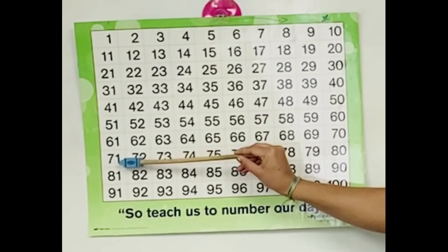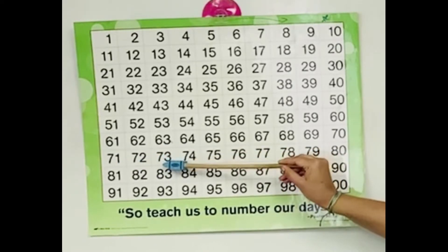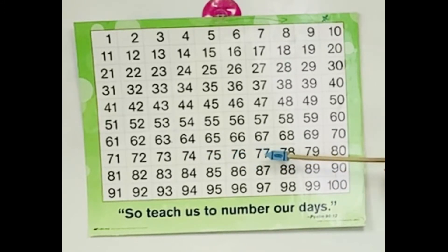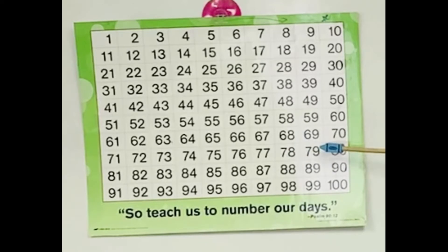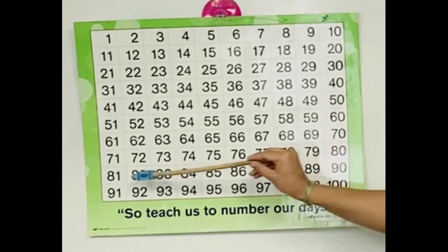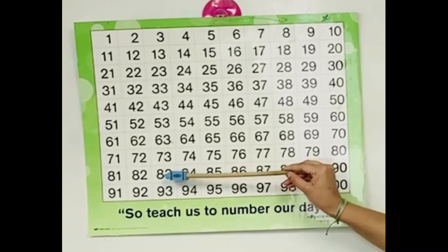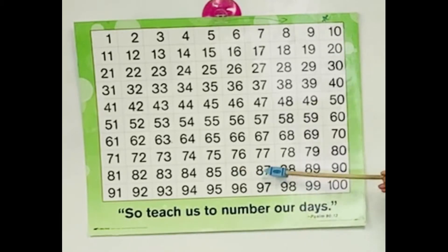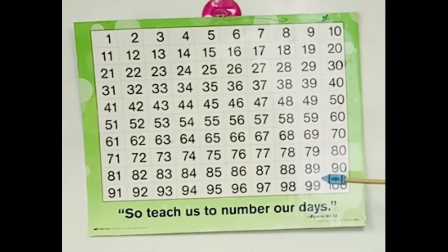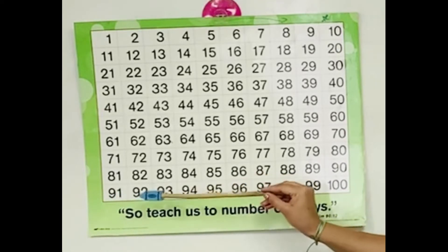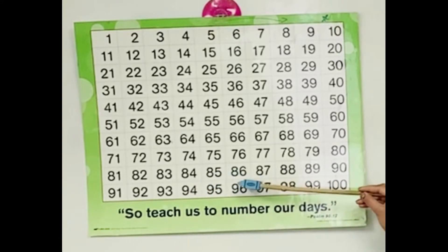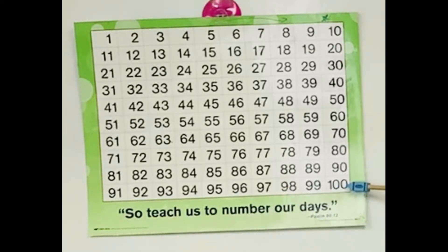Together boys and girls. Ninety-one, ninety-two, ninety-three, ninety-four, ninety-five, ninety-six, ninety-seven, ninety-eight, ninety-nine, one hundred.